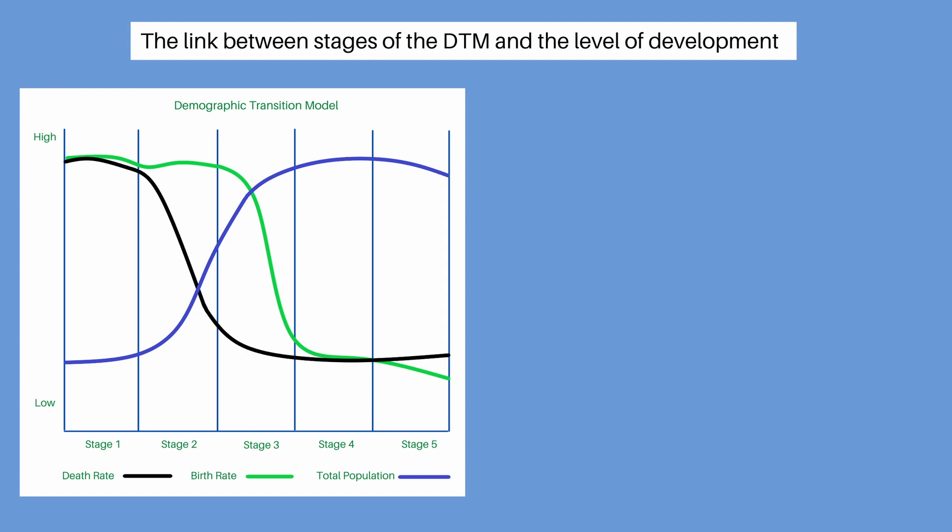The level of development of a population can be linked to one of the five stages of the DTM. As a population becomes more developed, its characteristics change.